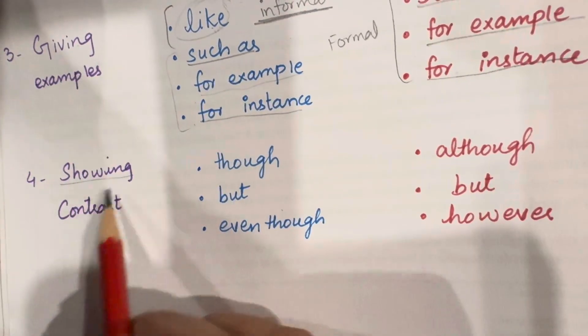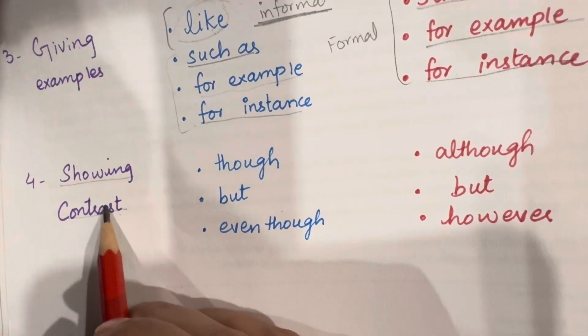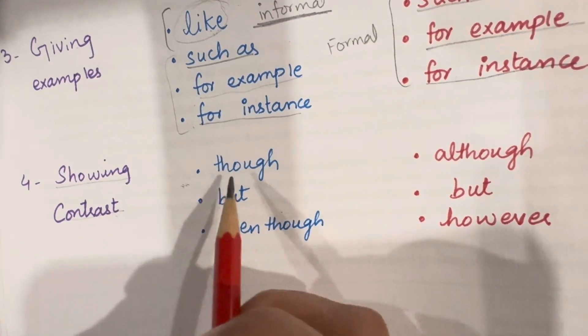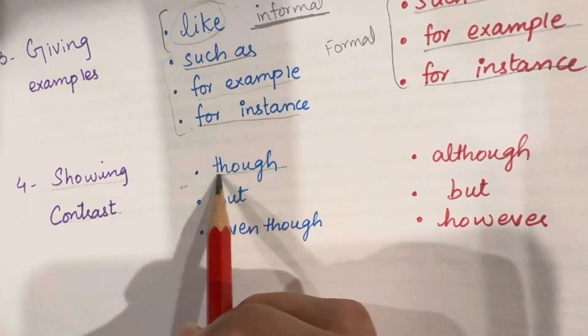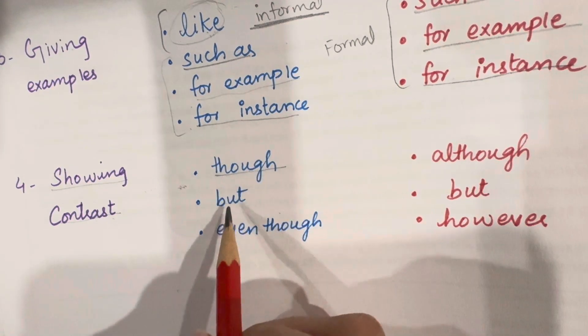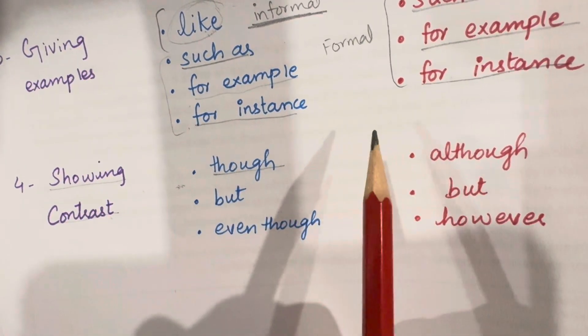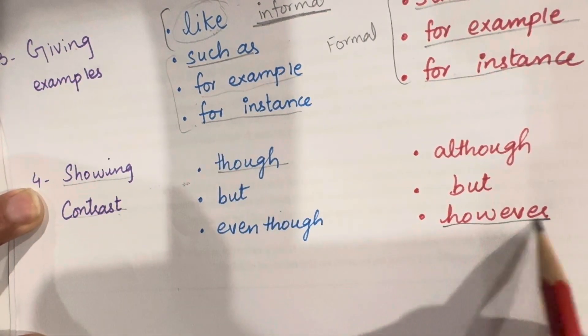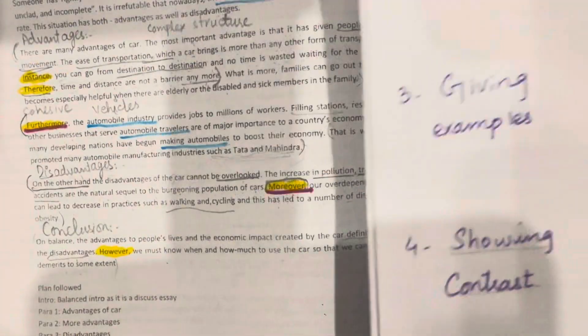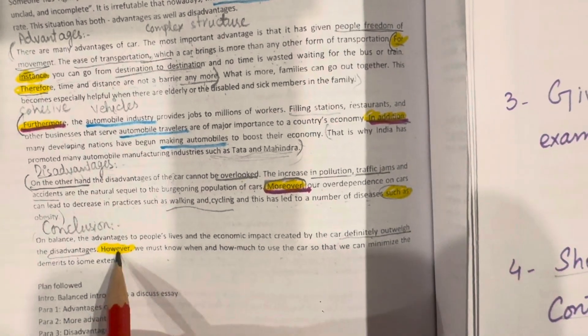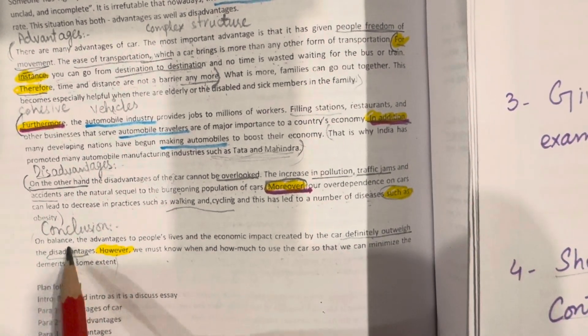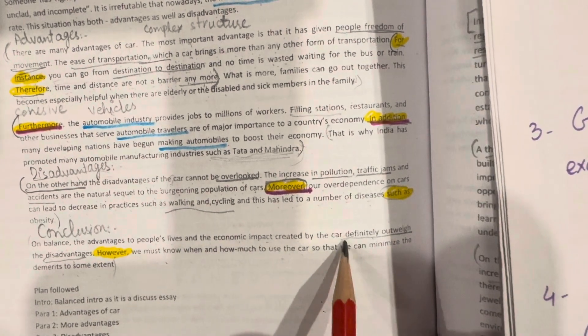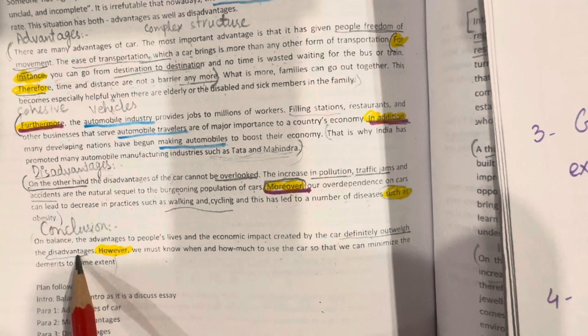Next is showing contrast. So, if you have to show comparison in those sentences, then in speaking you can use these words: though, but, even though. And in writing, you can use although, but, however. Like, look at this conclusion. On balance, the advantages to people's life and the economic impact created by the car definitely outweigh the disadvantages.